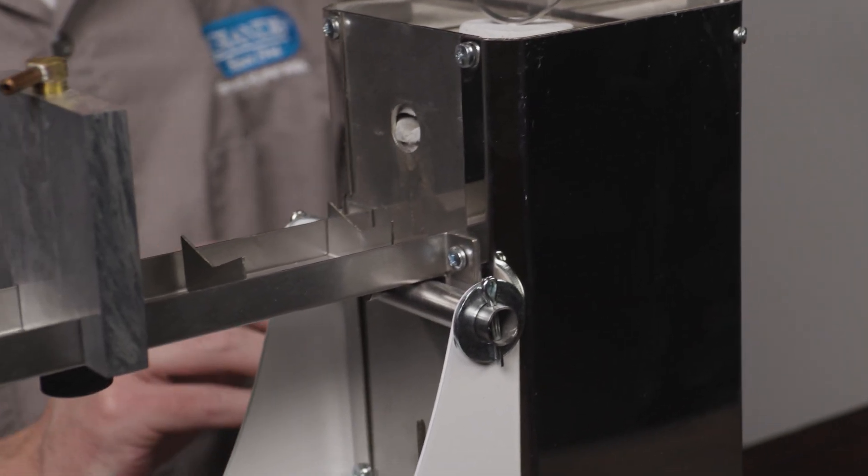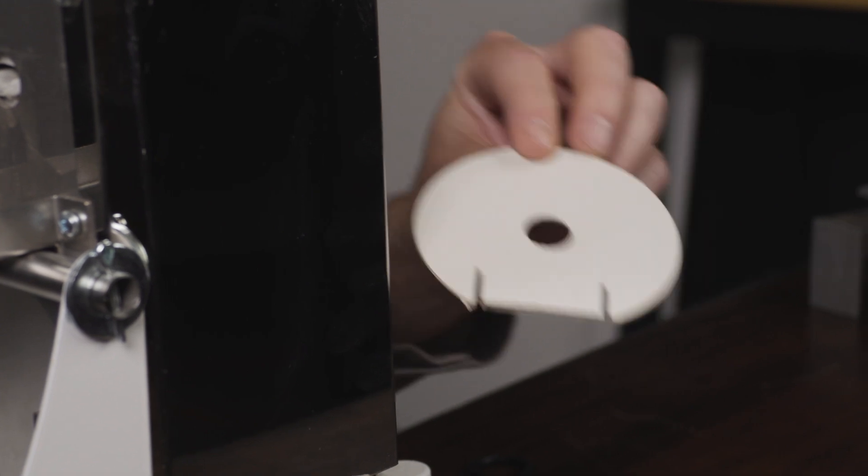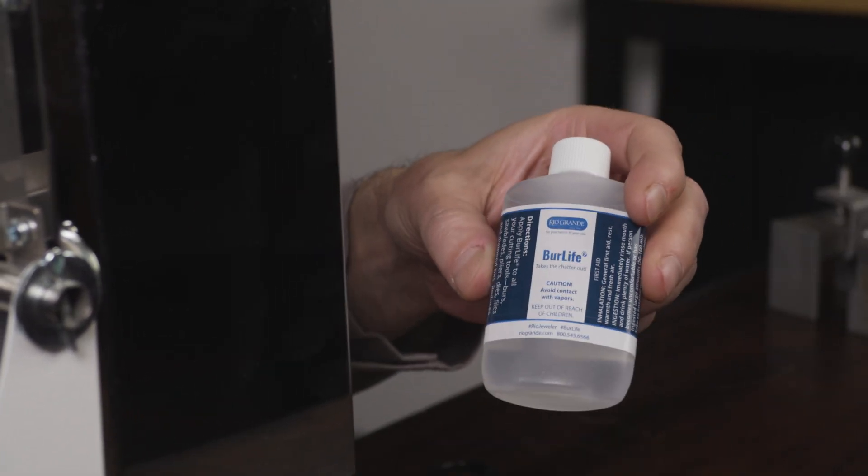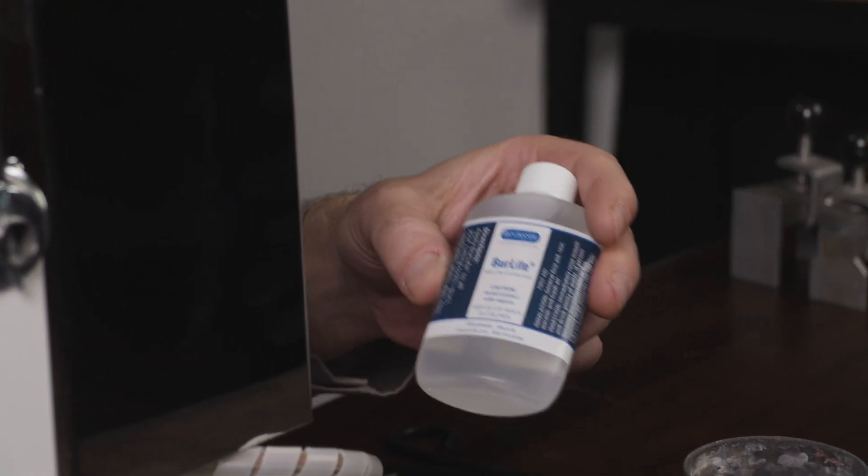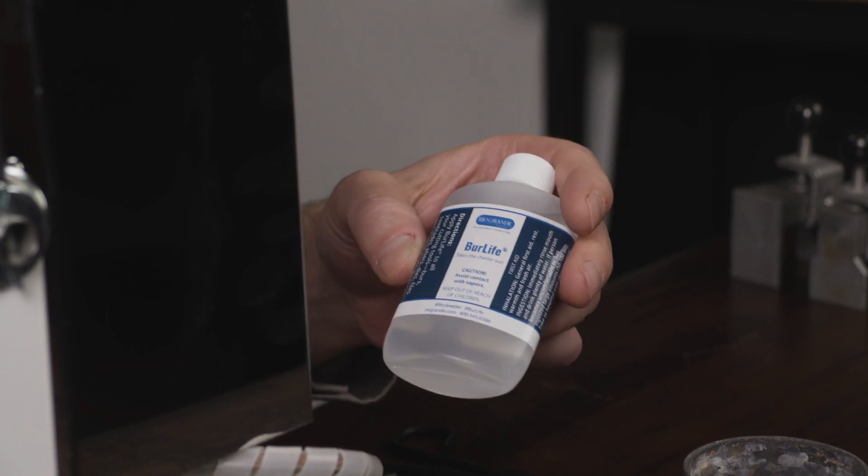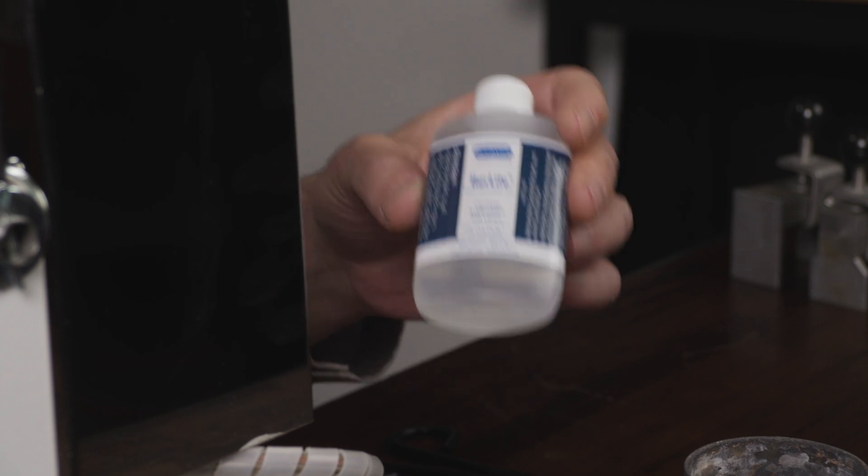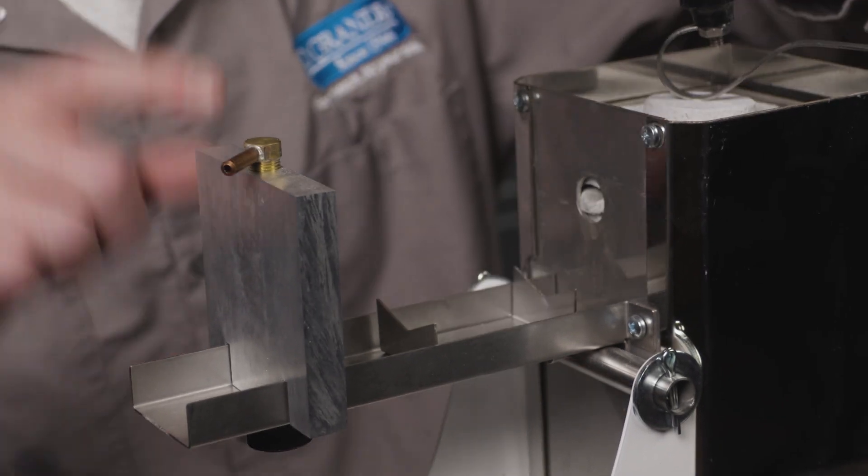Next, I'm going to grab the paper gasket and soak this in some oil. The one I would recommend is using some liquid burlife. The reason we soak this gasket is because the liquid is going to help us pull a vacuum against the bottom of our flask and create a better seal. So I'm going to soak the paper gasket and install it just like this.